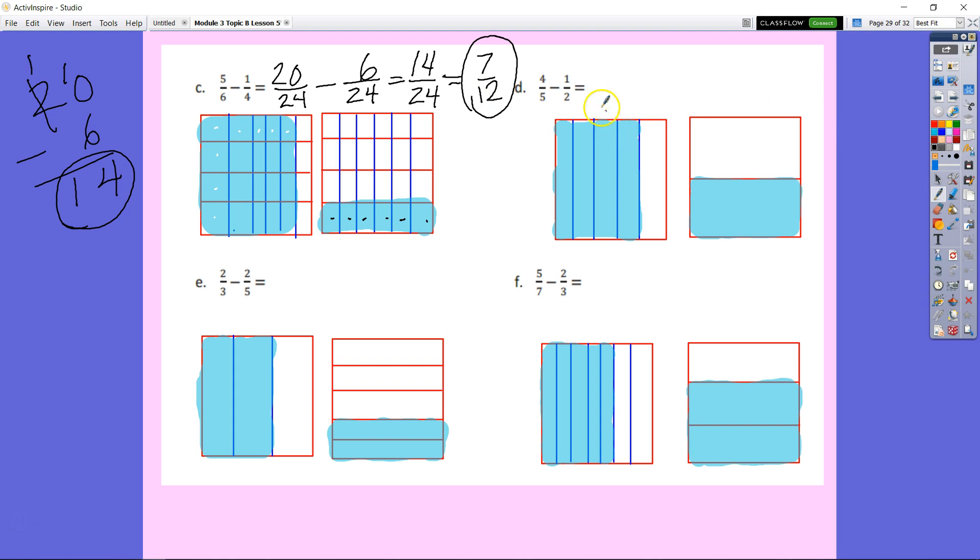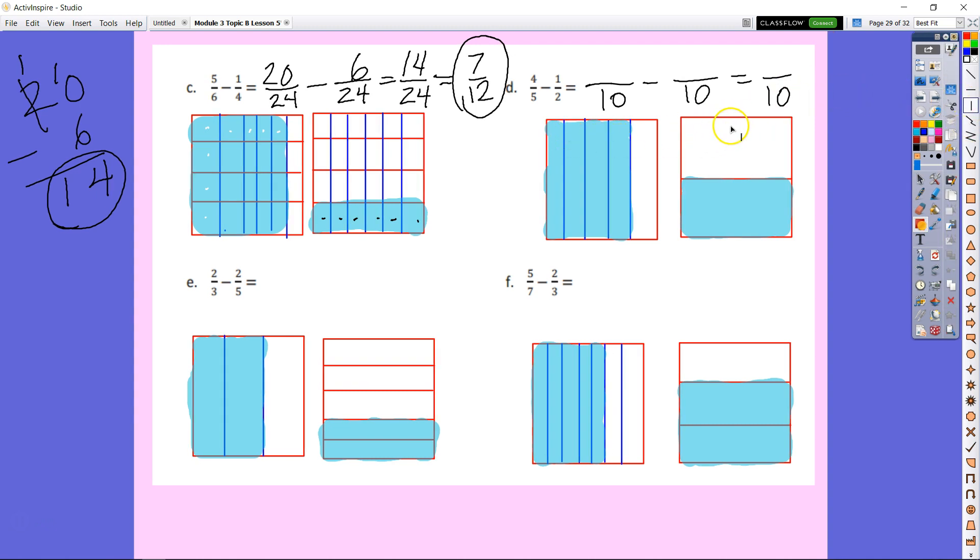All right. We have 4 5ths minus 1 1/2. Five times two is 10. So, we know our fractions are going to be 10ths minus 10ths minus 10ths. Now, that's 10ths because it's in the denominator. Let's go ahead and split those with our lines. And we have our vertical lines. We're going to put our four vertical lines in. 1, 2, 3, 4. 1, 2, 3, 4, 5. 1, 2, 3, 4, 5. All right. Perfect. And now, let's put our horizontal line in to split this, each one of these fifths in half.